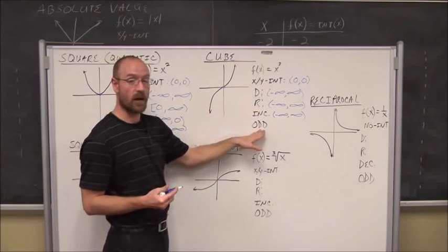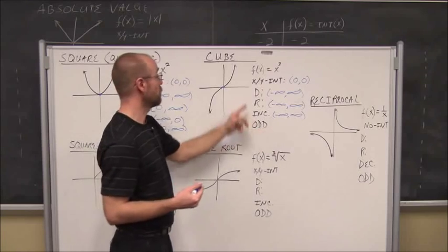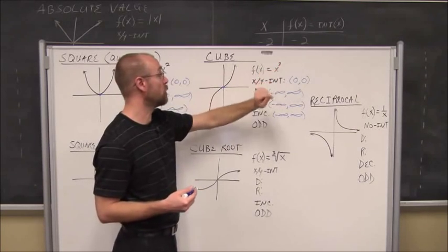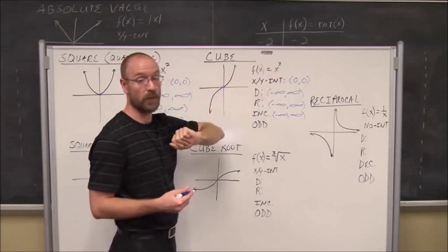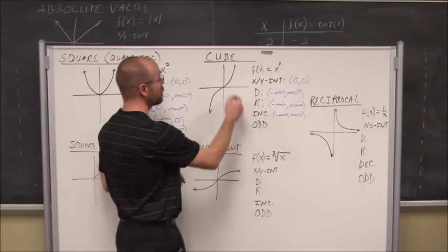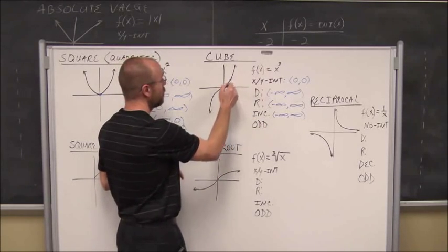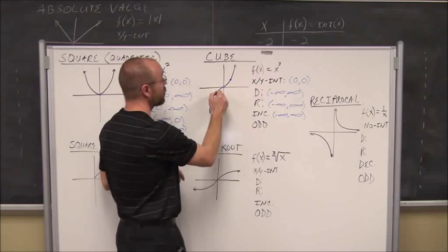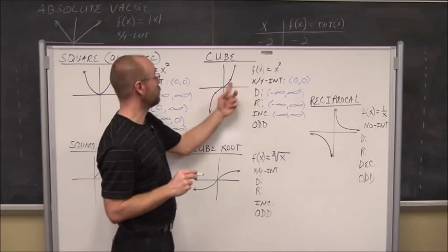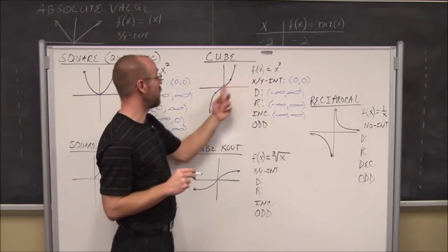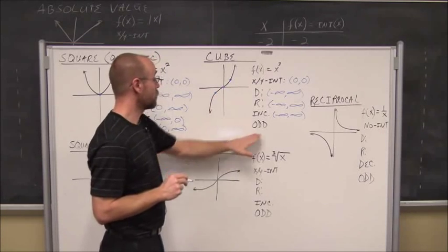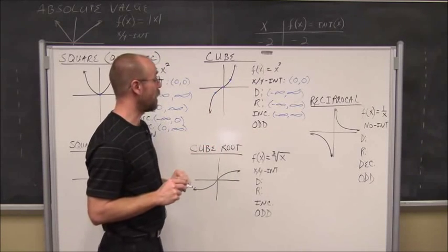The cube function is also an odd function — x cubed has an odd power, which is a clue. Any value (x, y) is reflected through the origin to (−x, −y), confirming it's an odd function.